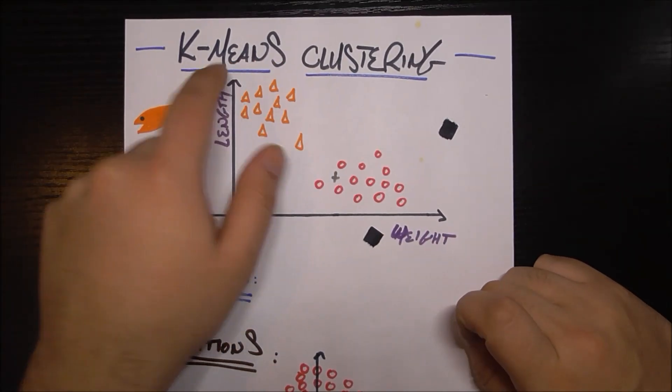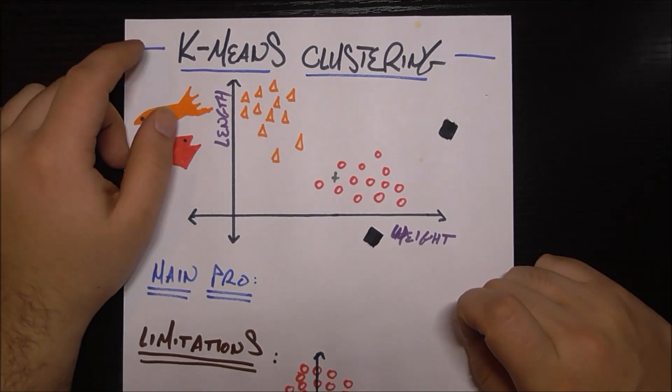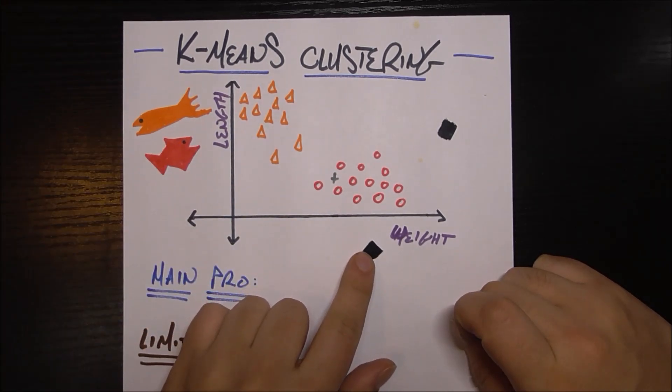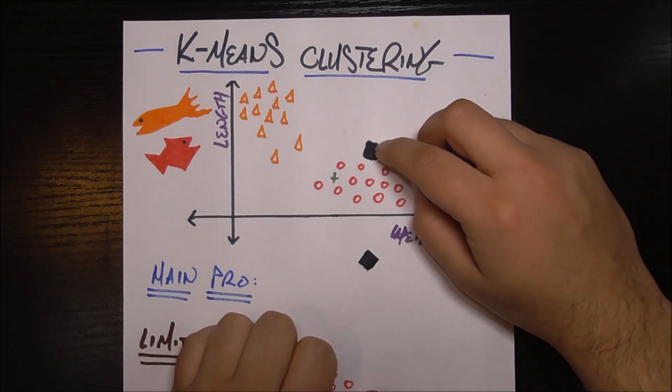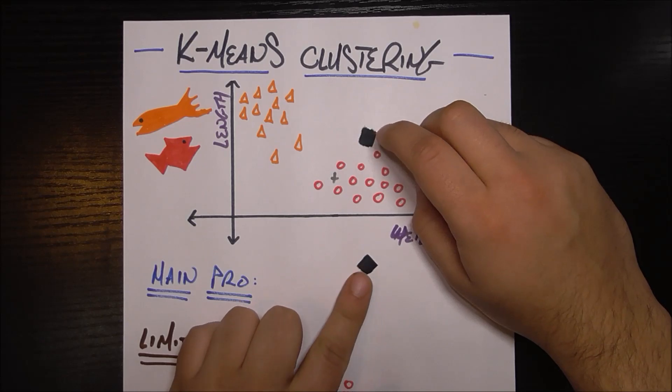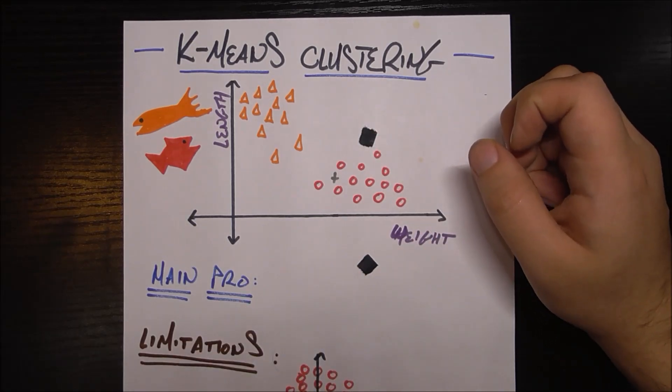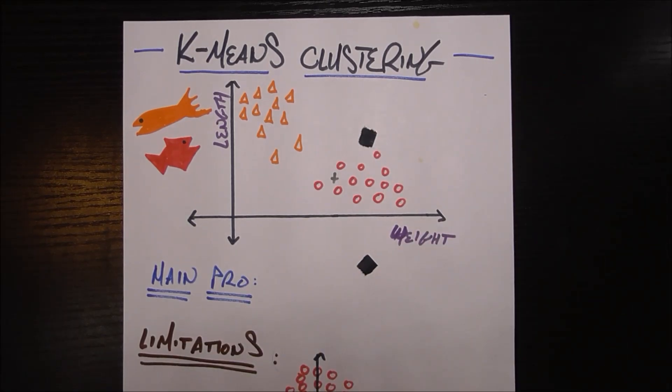Means, in this case, in terms of average, you want to think of it like that. So let's just say I choose one initial value right here, and I choose one initial value right here. We're going to see that this is a pretty bad initial approximation, but we're going to see how k-means fixes this so we get the right classification.